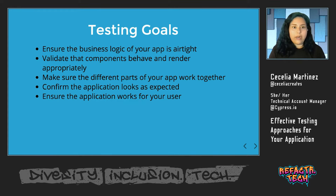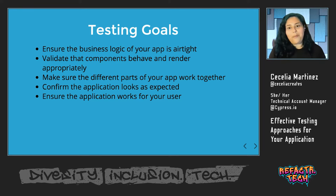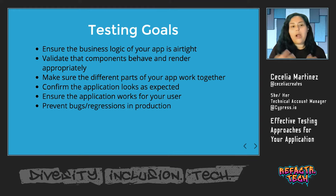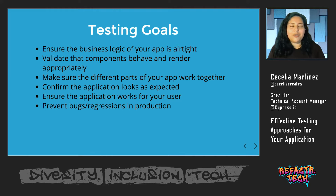Getting into more high-level goals that aren't specific to a part of your application: ensuring that the application works for your user is a really big one. If your user goes to your website and they can't log in or can't add an item to their shopping cart, that's a really big problem. You need to ensure that when your user visits your application, it's going to work as expected every single time. Another high-level goal is preventing bugs or regressions in production. Testing your application helps you catch bugs, errors, and regressions before they actually reach your user. You never want to see those in live production — you want to catch those as soon as they happen by testing your app early and testing your app often.